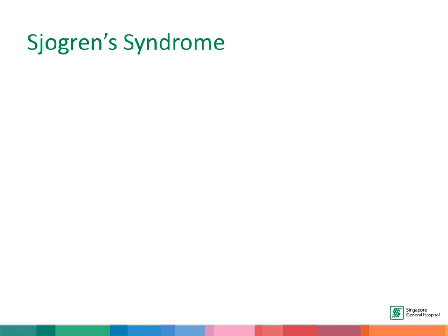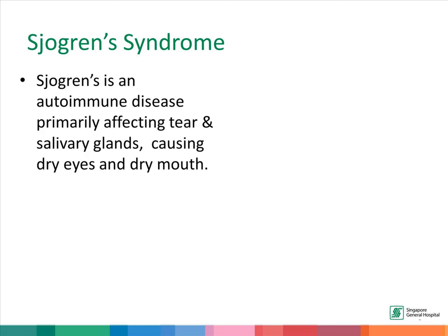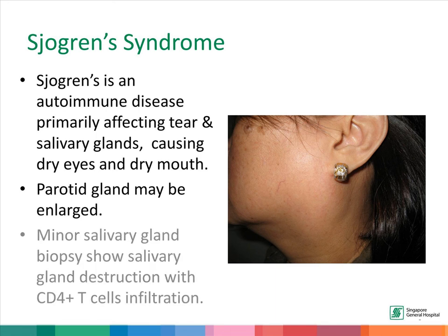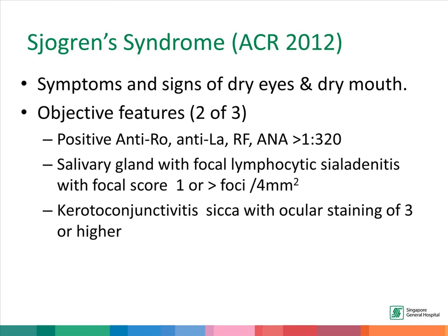The fourth condition is Sjogren's syndrome, an autoimmune disease primarily affecting the tear and salivary glands, thus causing dry eyes and dry mouth. In this picture, the parotid gland is enlarged. Biopsy of the minor salivary glands in the mouth will show salivary gland destruction with CD4-positive T-cell infiltration. The diagnosis requires the presence of symptoms and signs of dry eyes and dry mouth, plus objective features: autoantibodies like Ro, La, rheumatoid factor and ANA, or salivary gland inflammation as evidenced on biopsy, and dryness and inflammation of the conjunctiva with ocular staining.